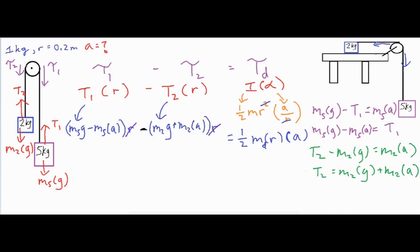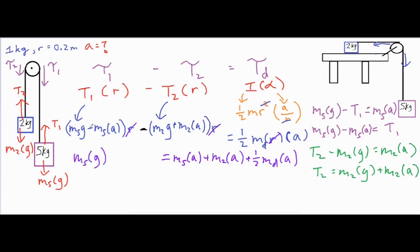The r cancels out on both sides, which we don't need anyway. Now I place everything containing 'a' — the m5·a term, the m2·a term, and the one half·m_d·a term — all on the right side of the equation. The gravity terms m5·g and m2·g remain on the left side.